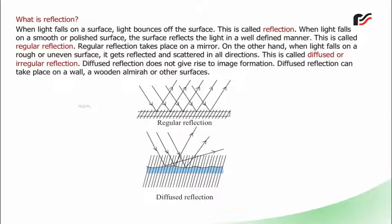Diffused reflection does not give rise to image formation. Diffused reflection can take place on a wall, a wooden almira, or other surfaces.